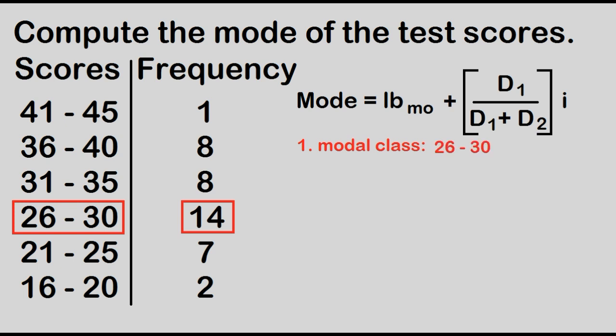The lower limit is 26. The upper limit is 30. The lower boundary of the modal class is the lower limit minus 0.5. 26 minus 0.5 is equal to 25.5.